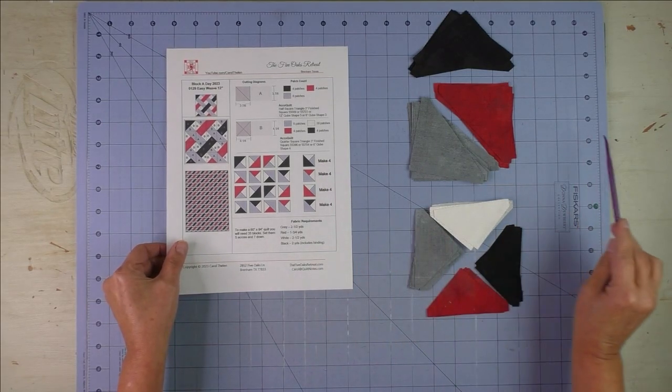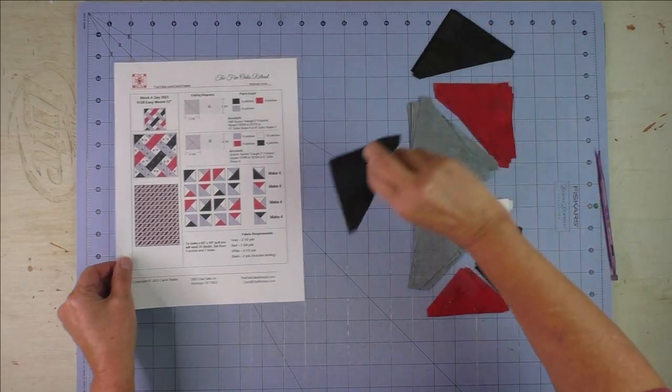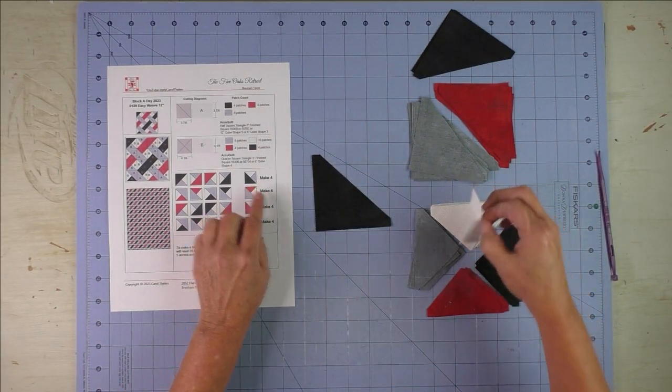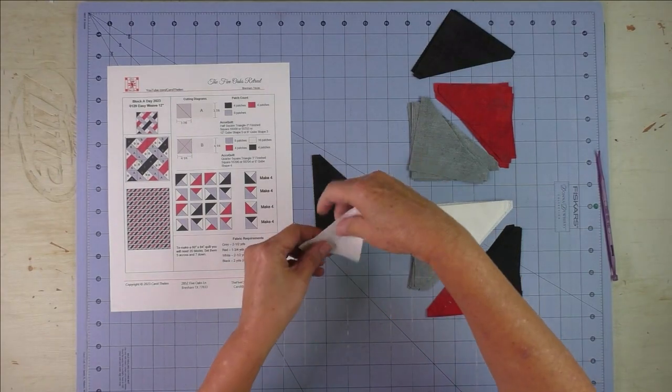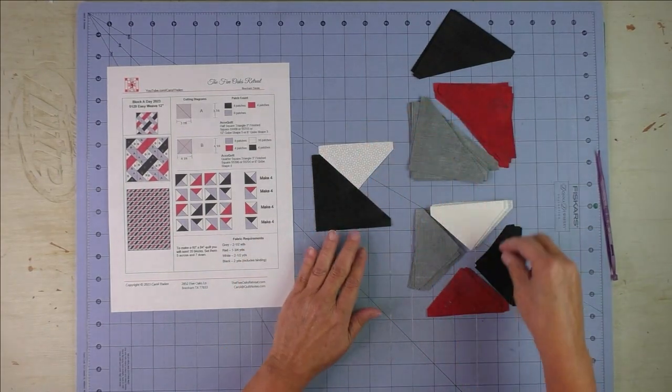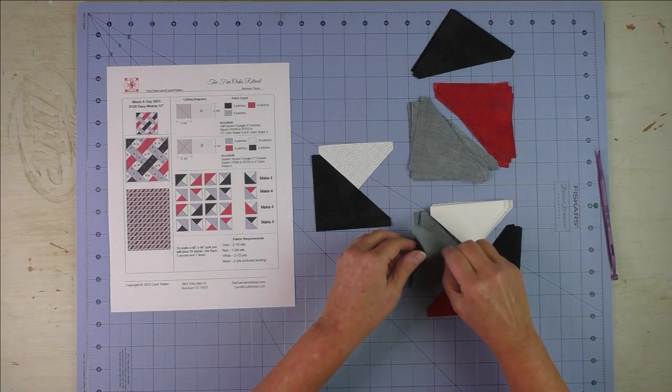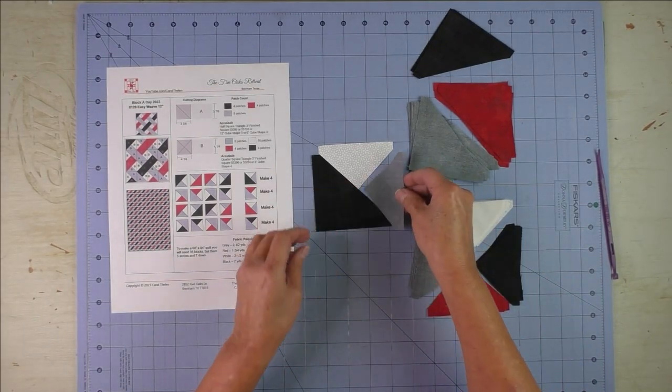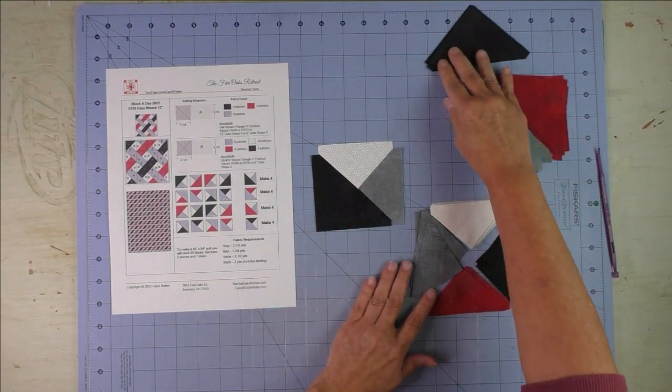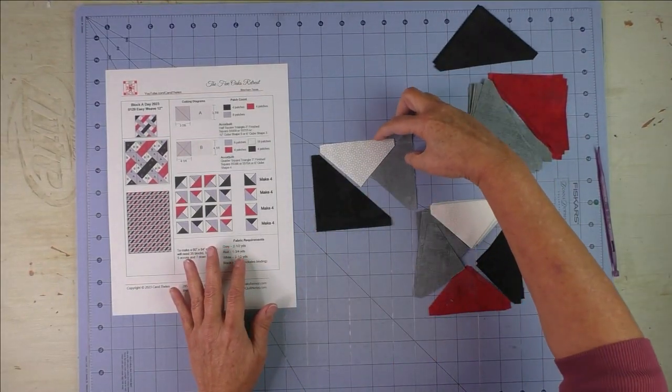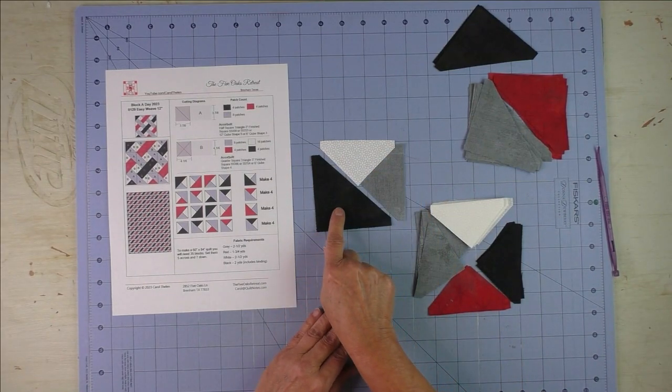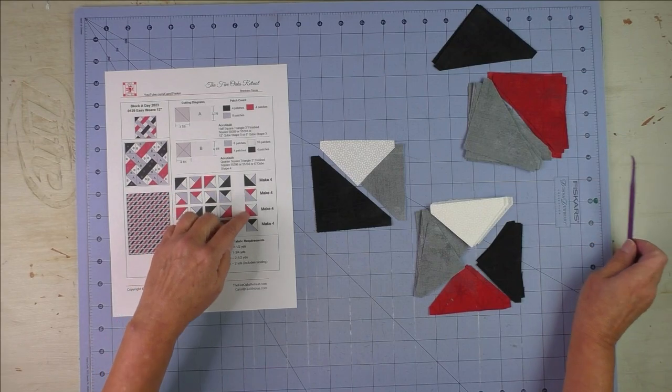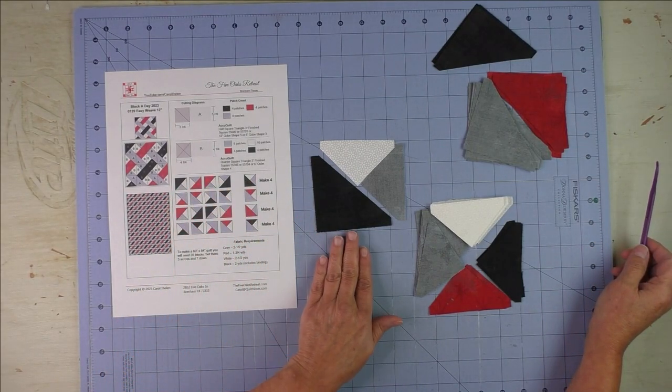Here are the pieces all cut out, and I'm going to start with this first one just to show you how it's done. You're going to choose one of the larger triangles—here we're going to put the black, then the white. See how this goes like this? And then the gray goes like this. We'll sew these two pieces together first, then sew them to this triangle. We'll make four of those, and you do that for the other three as well, and you'll have 16 patches.